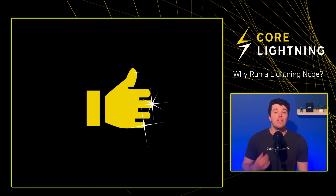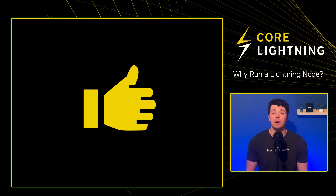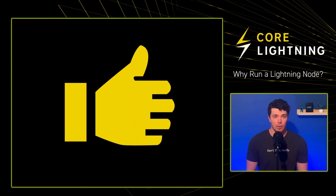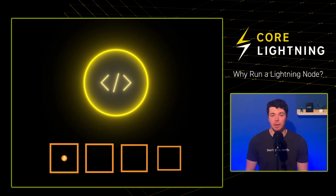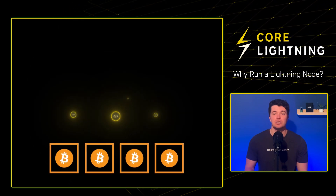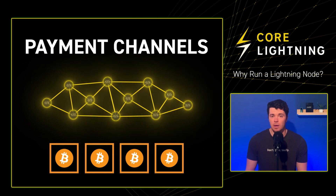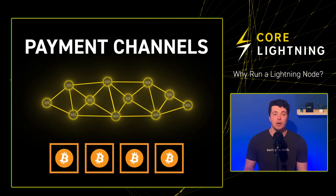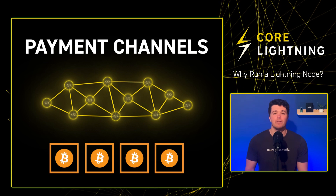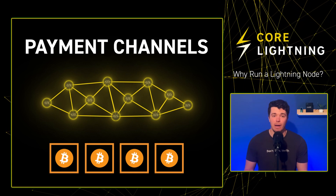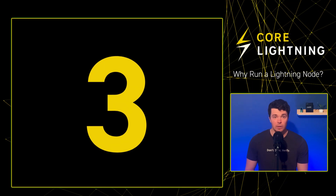Now that we understand the Lightning Network, let's explore why we might want to set up our own Lightning node. A Lightning node connects the Lightning Network to the main Bitcoin blockchain and facilitates connections to other Lightning nodes to create payment channels. While Bitcoin nodes verify every transaction on the blockchain, Lightning nodes only verify transactions that directly interact with them. Here are three reasons to run your own Lightning node.